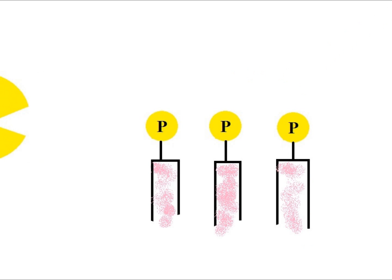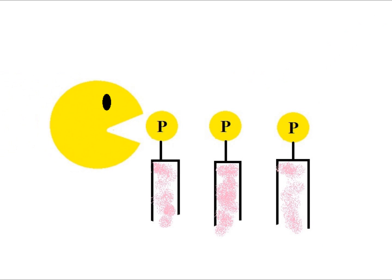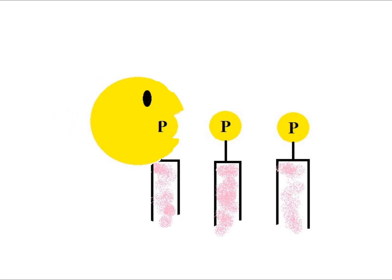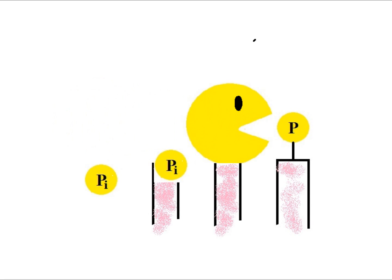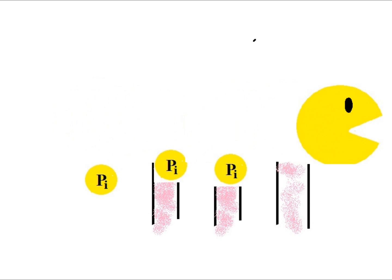When the response is finished, the response regulator is dephosphorylated by an action of histidine kinase, simple diffusion, or an external phosphatase.